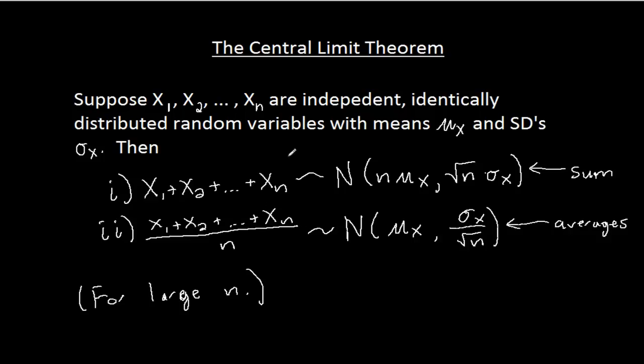If you add independent, identically distributed random variables together, you get a normal random variable. Or if you average them together, you get a normal random variable. And this tells you what the means and the standard deviations of those normal random variables are.